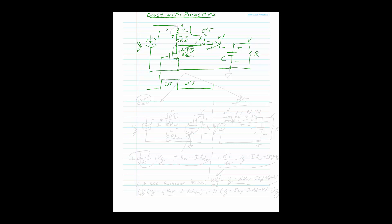We draw two separate circuits — one for DT and one for D'T — and keep things systematic. This is especially important for discontinuous conduction mode, where the inductor current drops to zero, giving three stages: DT, D2T, and a final stage where inductor current is zero.